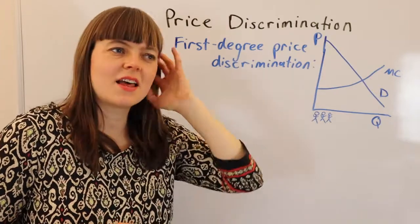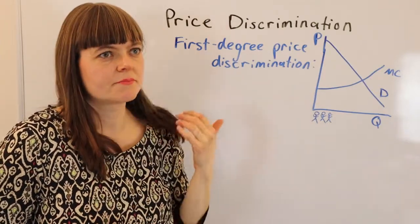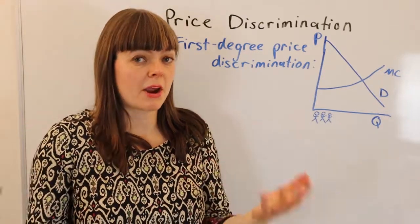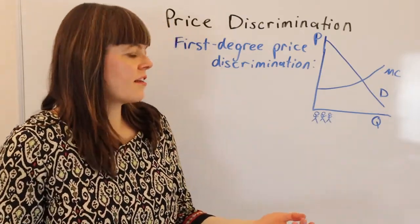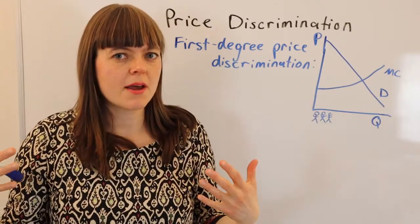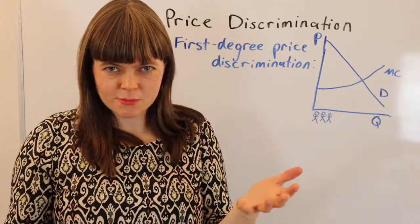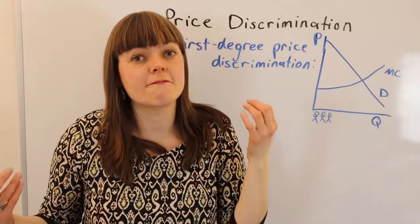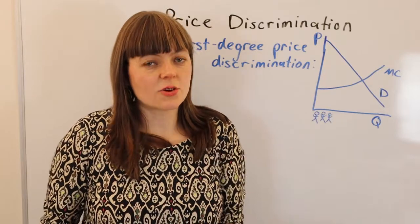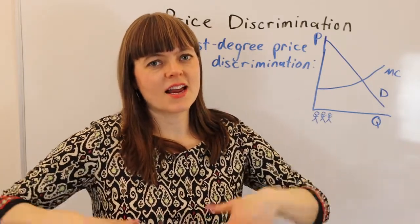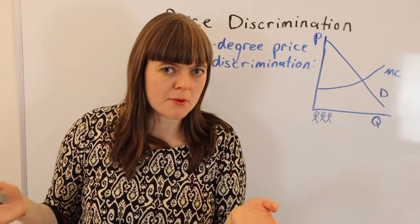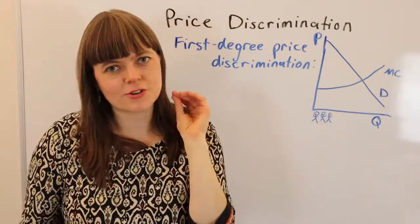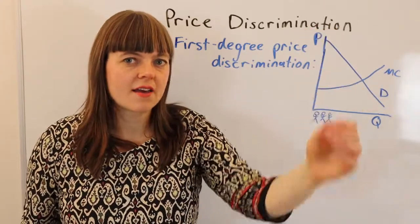Some people argue that colleges have first degree price discrimination because they can see the parent's income and adjust the price accordingly. But that's not perfect price discrimination because colleges can't see into people's heads to know how much they value the education. Ten people all with an income of $50,000 might each value a college education at a different amount.